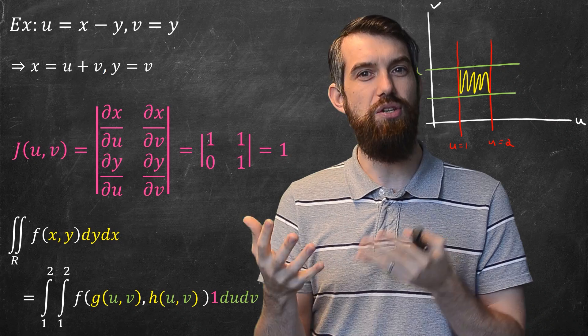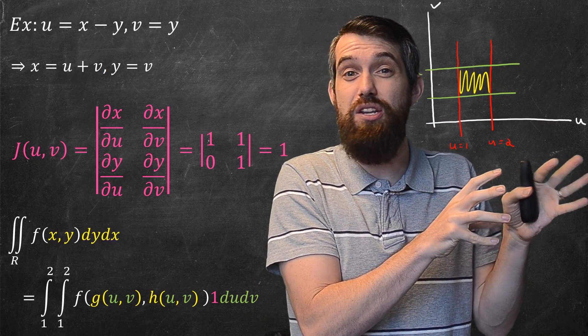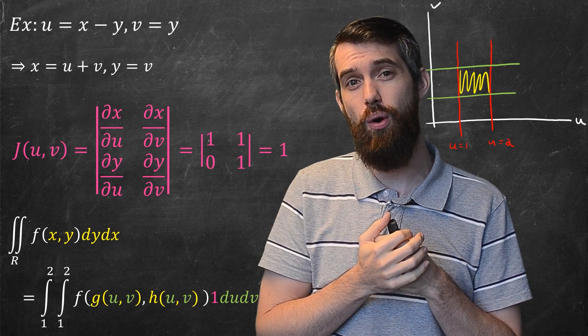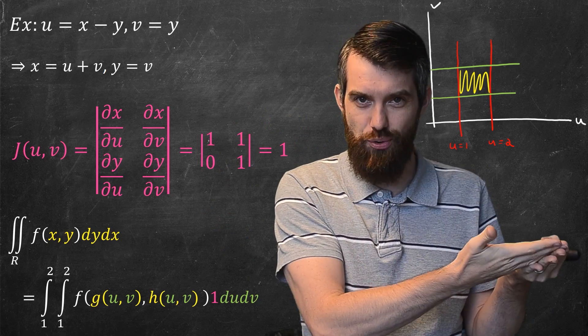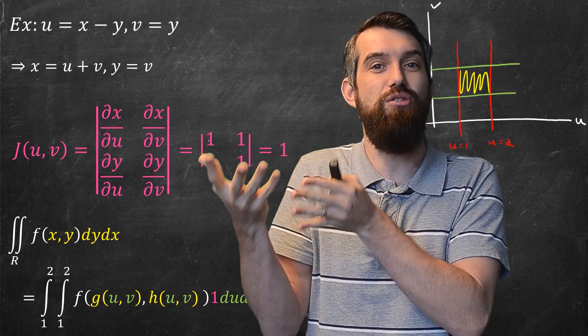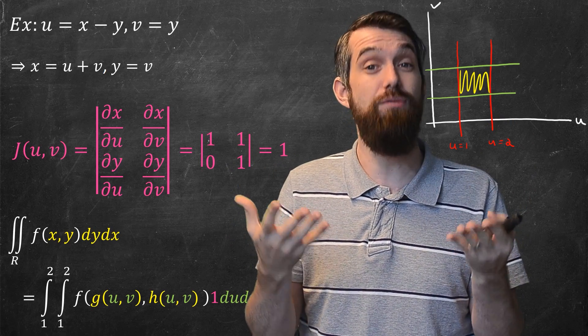You might want to do this transformation of variables for multiple reasons. It might be that your region is really messy and you can transform it into a much nicer region with the substitution, or it might be that your integrand is really messy and you don't know how to integrate that, and then with the substitution you can now integrate the integrand. There's multiple reasons why you might wish to do a change of variables.